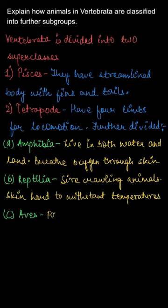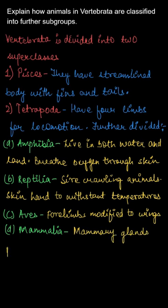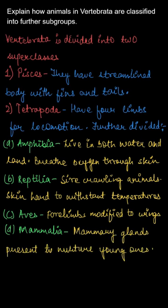The next one is Aves, which have four limbs modified into wings. The last one is Mammalia, in which mammary glands are present to nurture the young ones. Thank you.